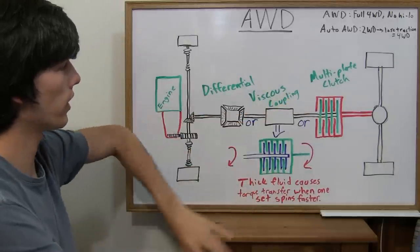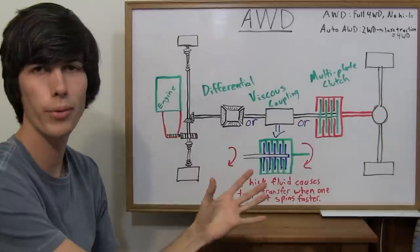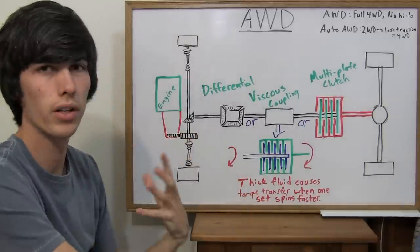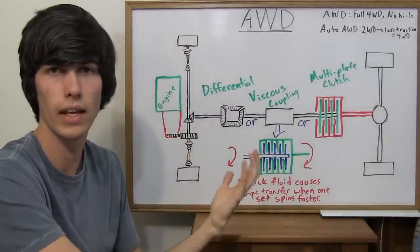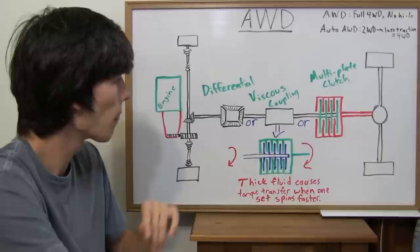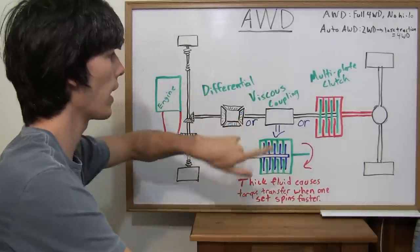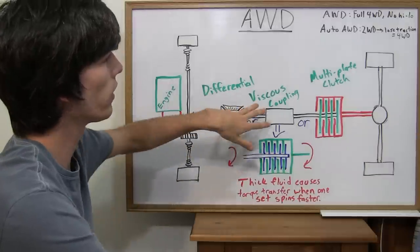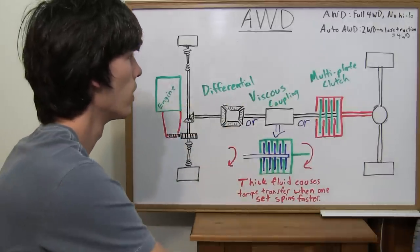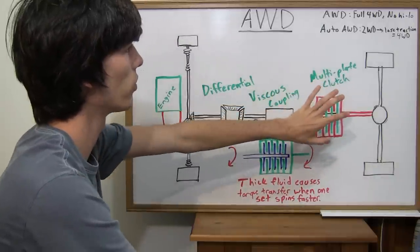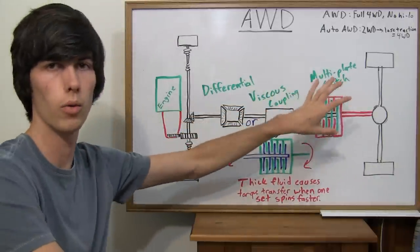Now I've put three different devices on this shaft. All three are not going to be on the shaft. I just wanted to show several different devices that can be used in all-wheel drive. So it could be just a differential. It actually could be a differential and a viscous coupling, but you wouldn't see those with a multi-plate clutch. This I'm pretty much going to use for explaining the automatic all-wheel drive.